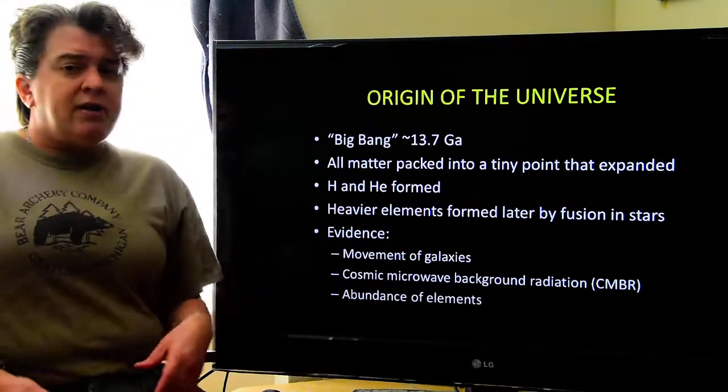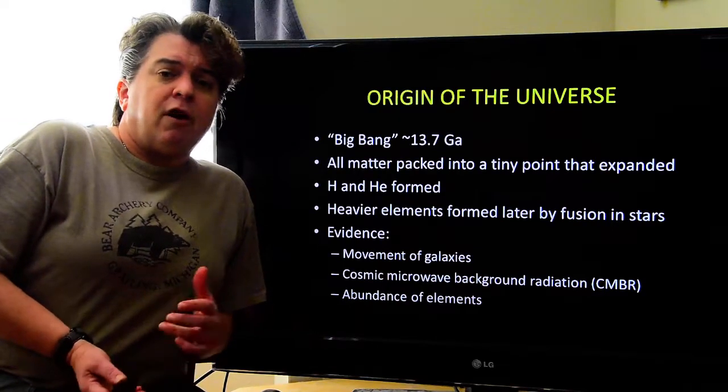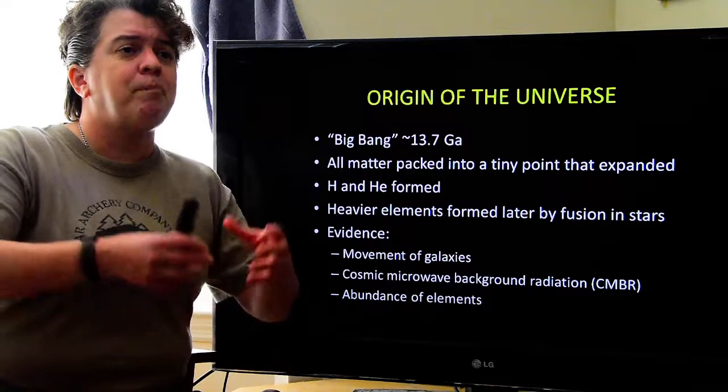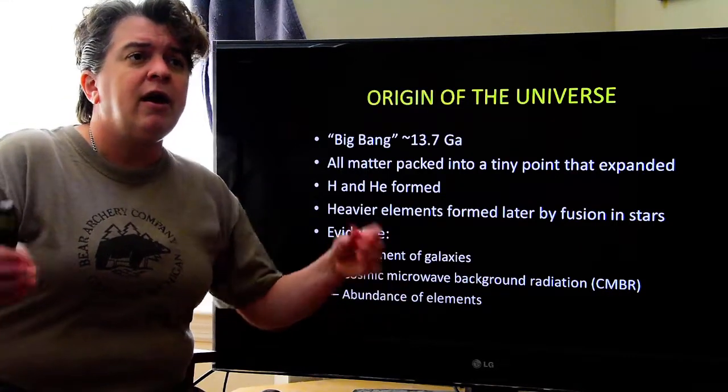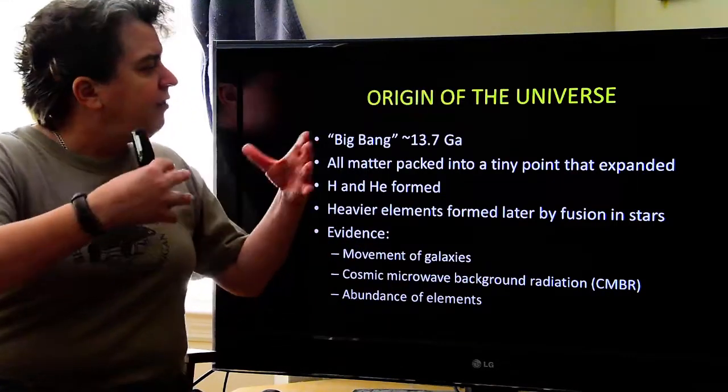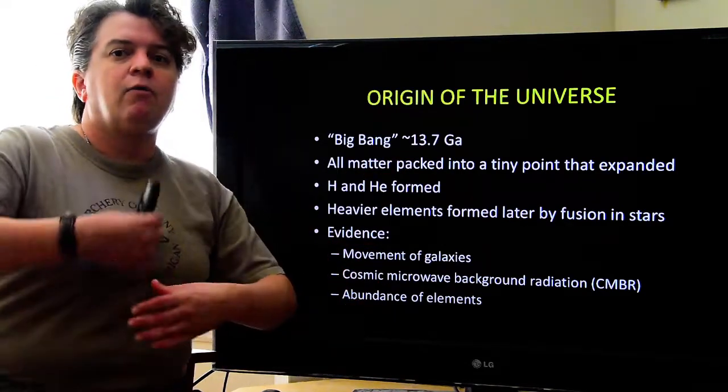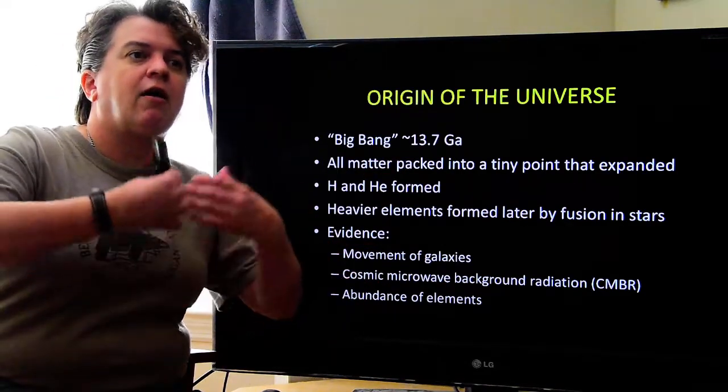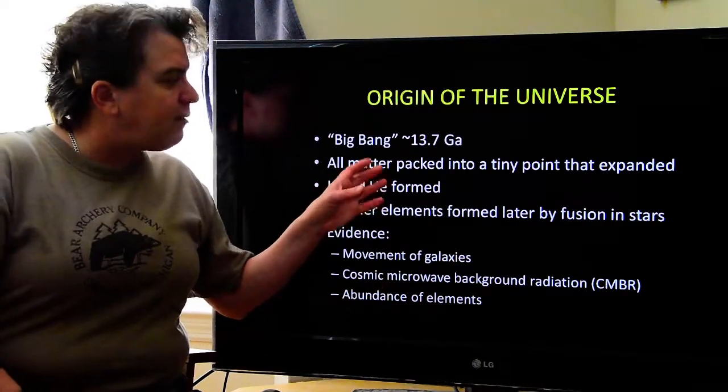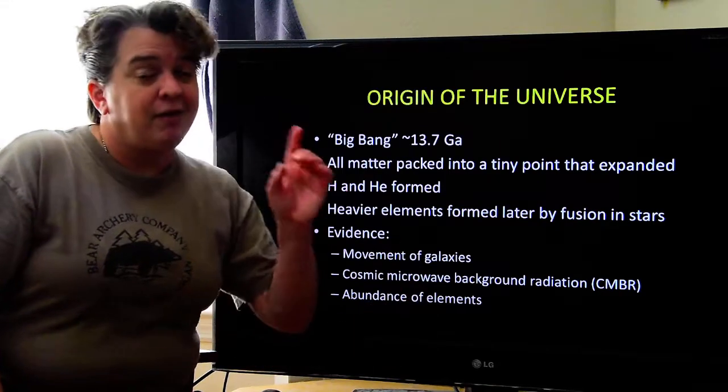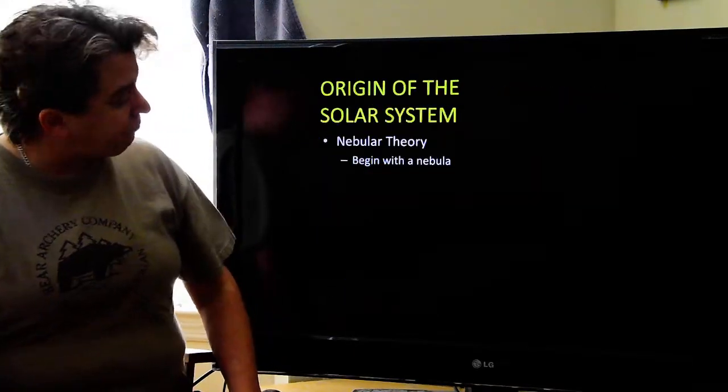And then there's the abundance of elements. So, astronomers and astrophysicists have told me that when you look at the abundance of elements that are found, it makes sense for the universe to be about 13.7 billion years old with these stars existing that are forming these different elements in them. And, like I said, you want to know more about this, take an astronomy class.